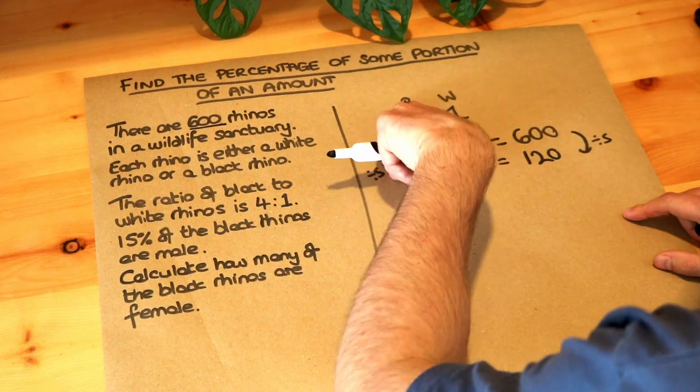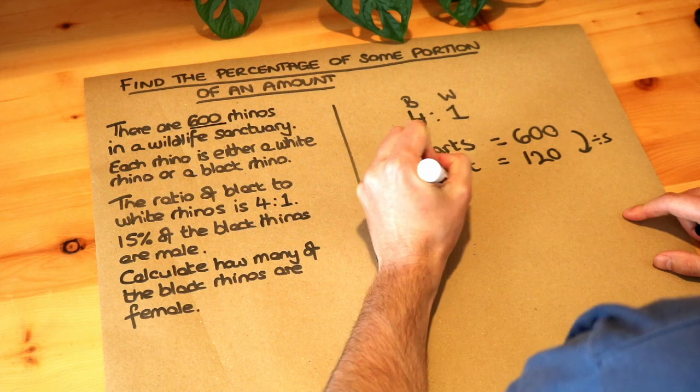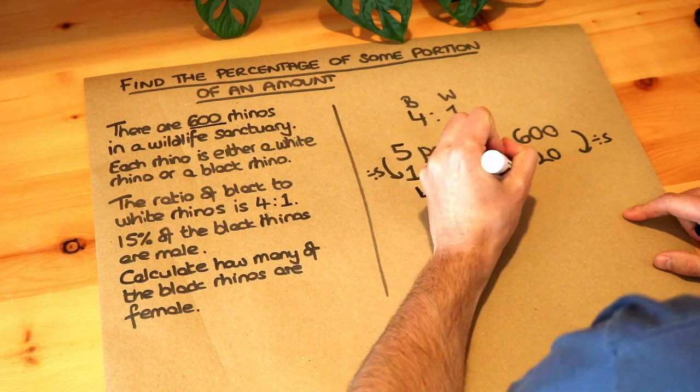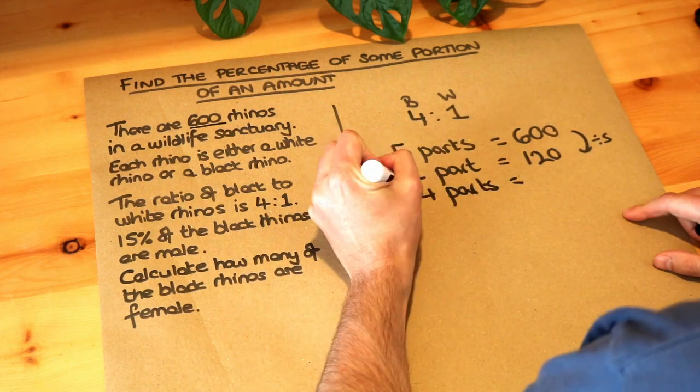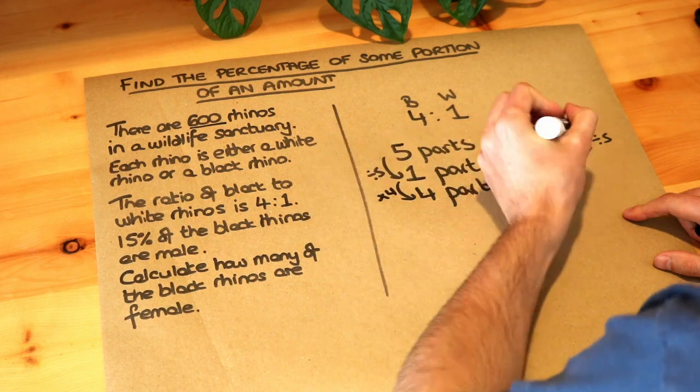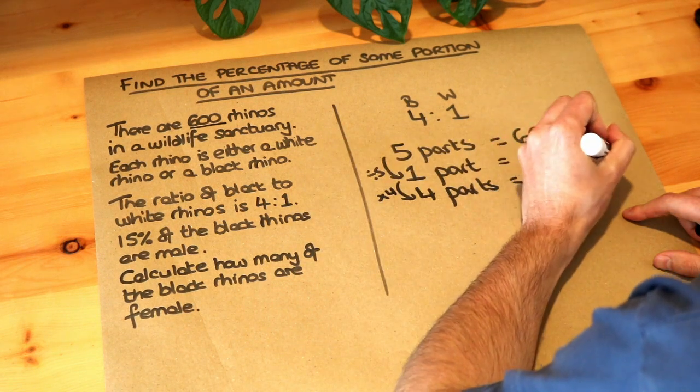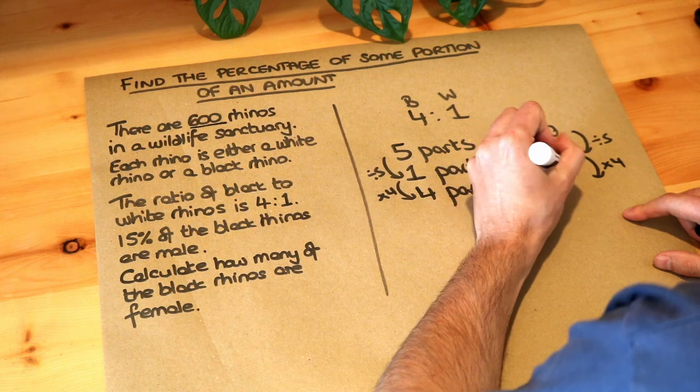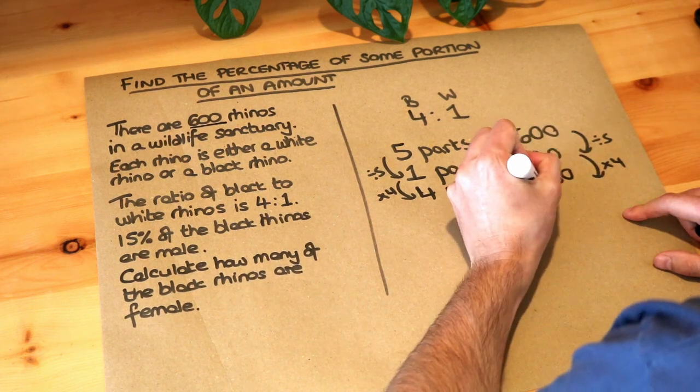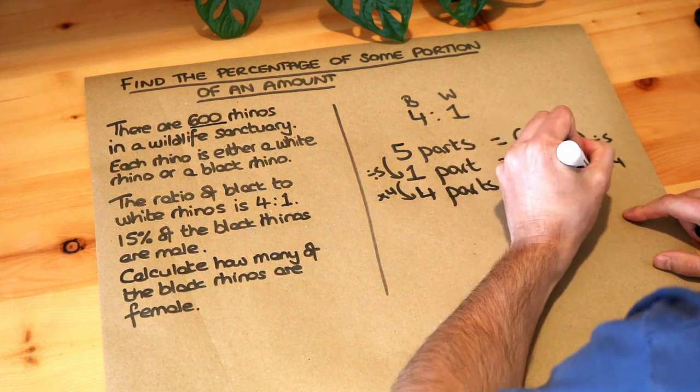Now we want four parts for black rhinos. So you work out four parts and to get from one to four, we're timesing by four. So if we have four times as many parts here, 120 times four is 480. So there's 480 black rhinos.